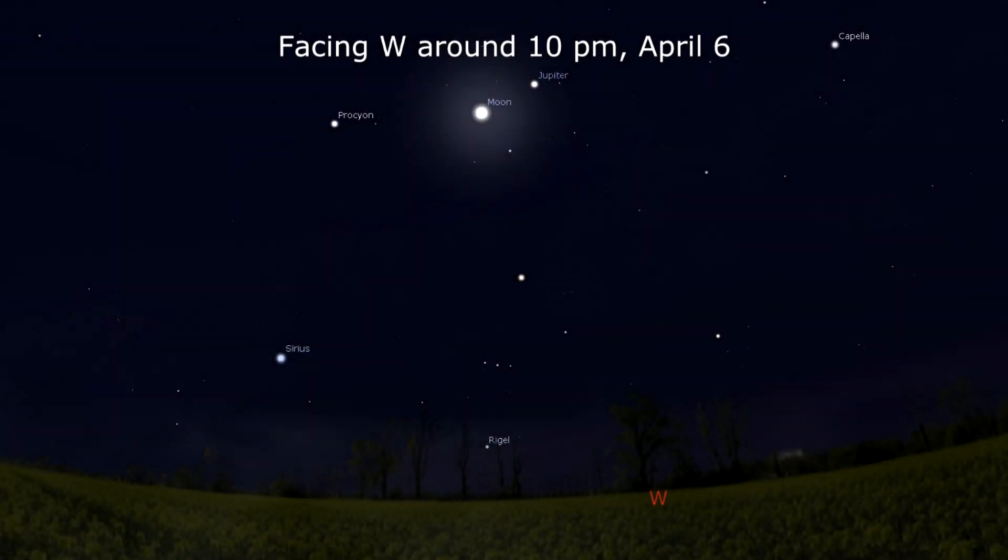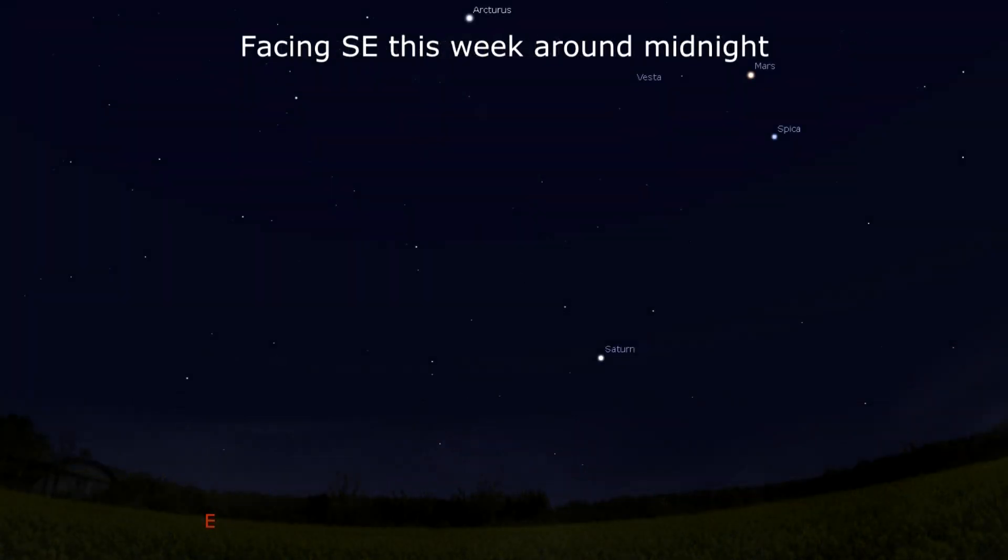Jupiter is joined by the Moon in Gemini on April 6th. Look for the pair in the evening. Saturn is now visible by midnight, a welcome sight for sidewalk astronomers looking to share the night sky with passersby.